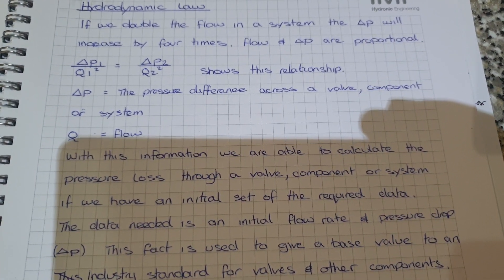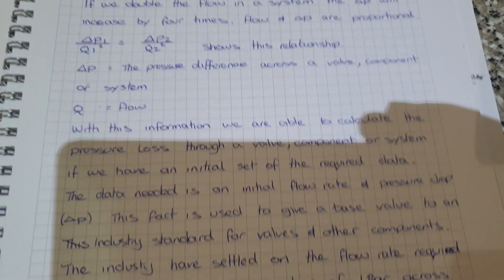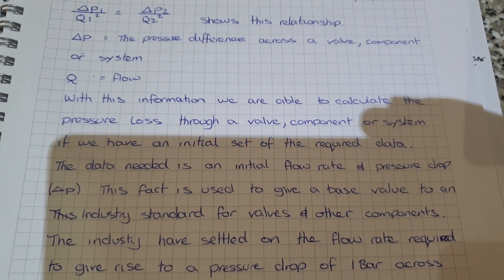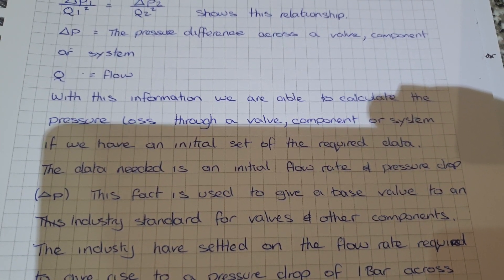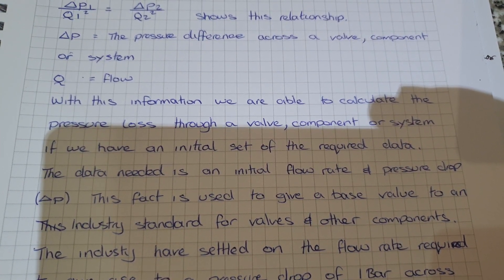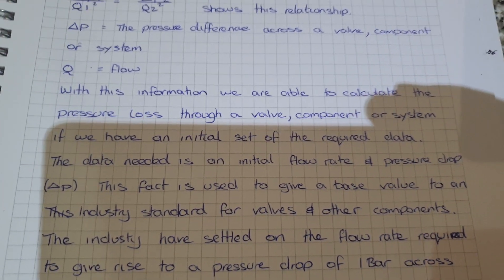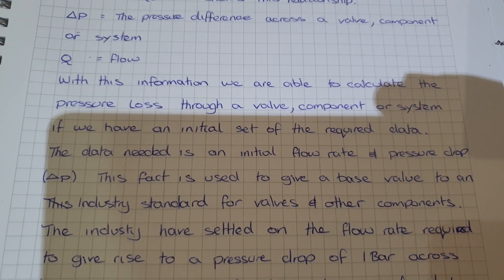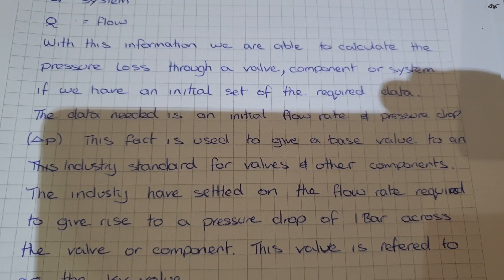Delta P being the pressure difference across a valve, component, or system, and Q equaling the flow. For this, the pressure difference is in bar and the flow is in cubic meters per hour. With this information, we're able to calculate the pressure loss through a valve, component, or system if we have an initial set of the required data.